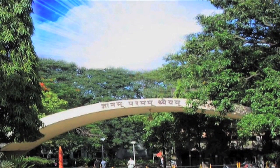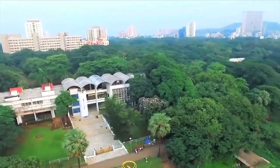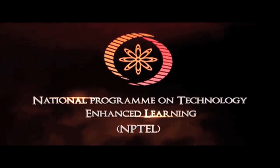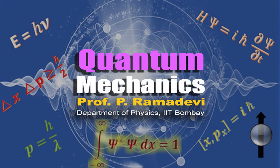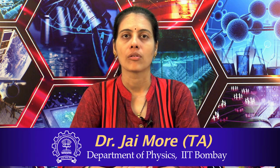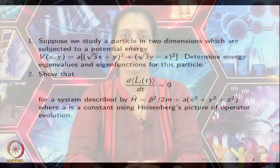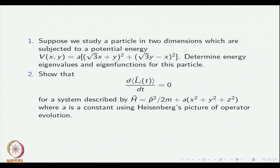Nanam Paramam Dheyam — Knowledge is Supreme. Let's start with the harmonic oscillator problem. In problem 1 of this tutorial, you are given a potential energy term in terms of Cartesian coordinates x and y, and you are asked to determine the energy eigenvalue and the corresponding eigenfunction for a particle subjected to a 2-dimensional potential.